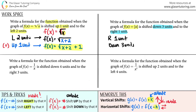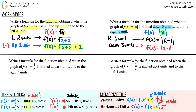Horizontal shifts are inside the function. For f(x) equals the absolute value of x, inside the function is anything inside the absolute value bars. Shifting right uses a minus sign, so I write x minus 1 inside the absolute value. Then for down three units — shifting down is a negative outside the function — so I add minus 3 on the outside. That gives f(x) equals |x minus 1| minus 3.